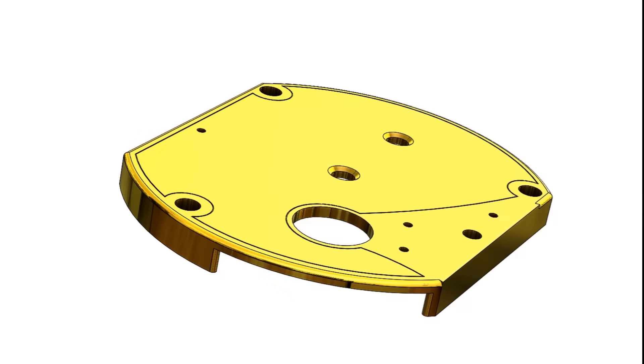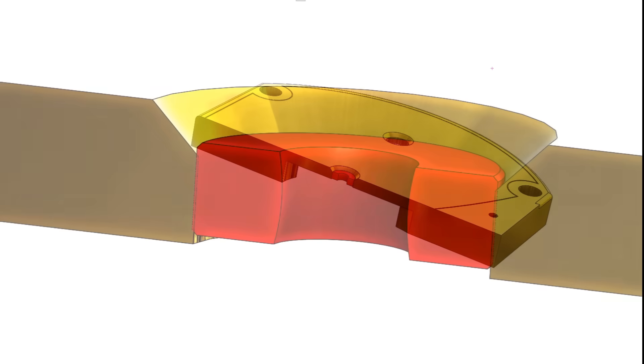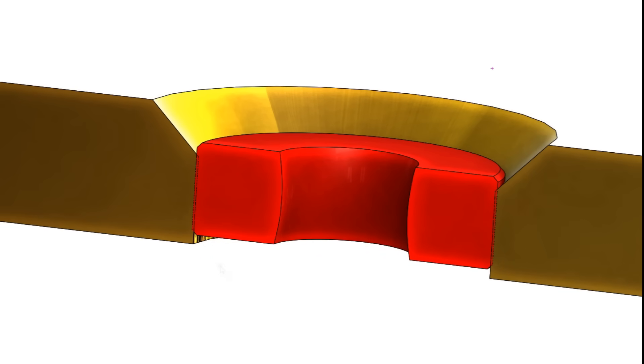The modern method of fitting a jewel to a movement plate or bridge is to form a hole in the receiving material that's slightly smaller than the jewel outside diameter, generally by a hundredth of a millimeter, and then to simply press the jewel into position.